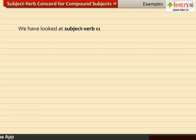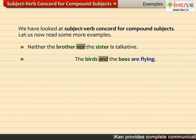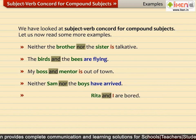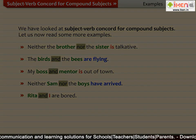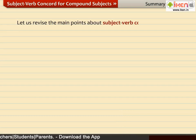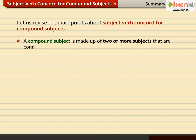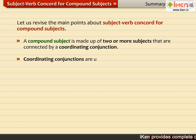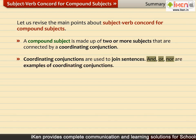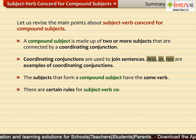We have looked at Subject-Verb Concord for compound subjects. Aamir has explained Subject-Verb Concord for compound subjects to Shirin. Let us now revise the main points before Aamir and she leave the cafeteria. A compound subject is made up of two or more subjects connected by a coordinating conjunction. Coordinating conjunctions such as AND, OR, and NOR are used to join sentences. The subjects that form a compound subject have the same verb.